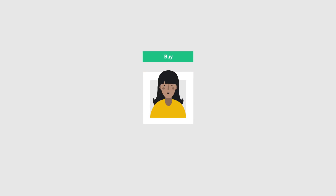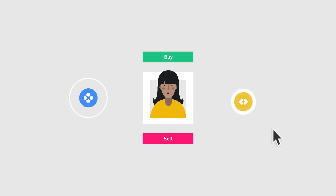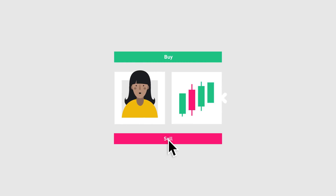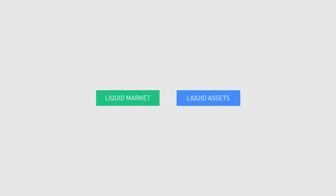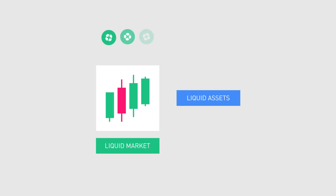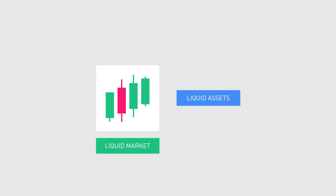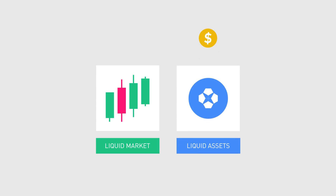What is liquidity? Liquidity is defined as the ability to buy or sell assets in the market without causing a drastic change in the asset's price. Liquidity can refer to two different areas: liquid market and liquid asset. Liquid market means that there are always investors in the market willing to trade. A liquid asset refers to an asset that can be easily converted into cash.